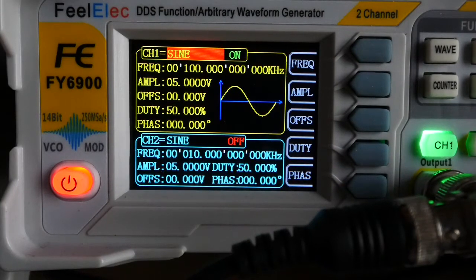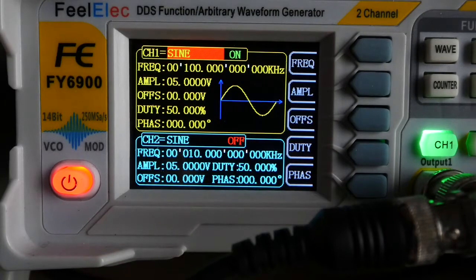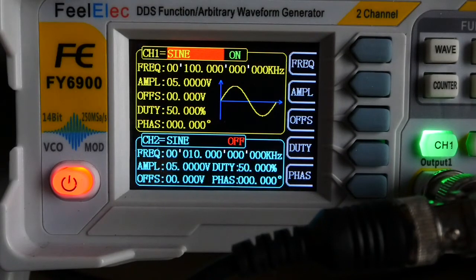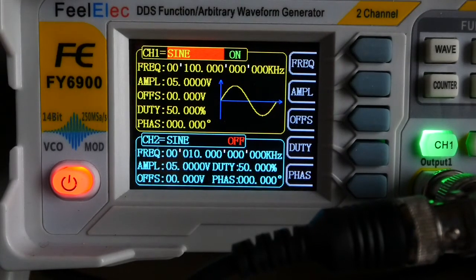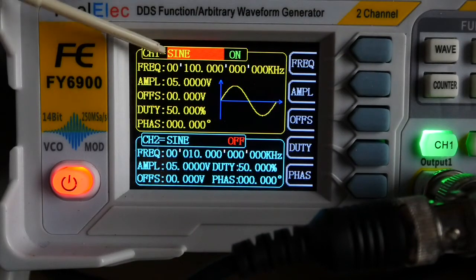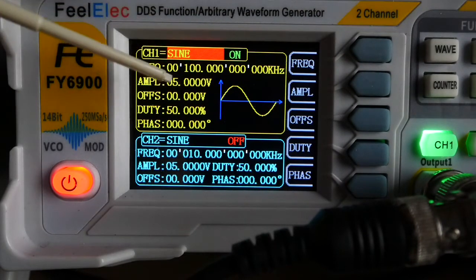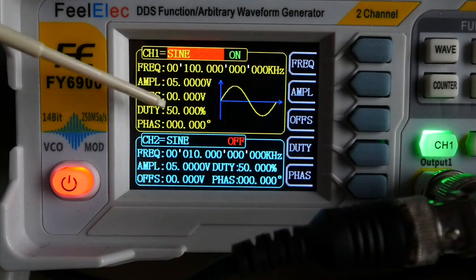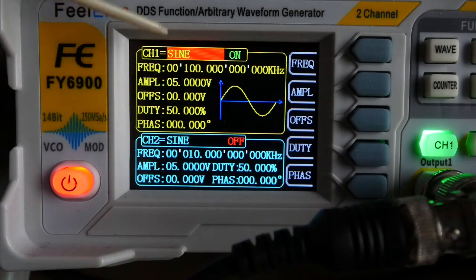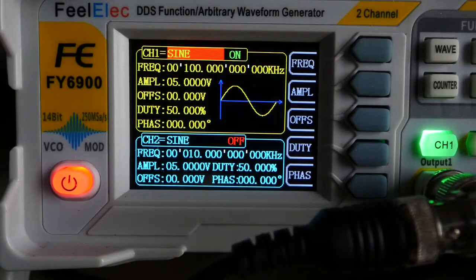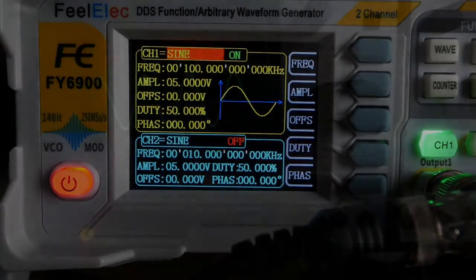First of all, we'll look at how the FFT display actually gives us information. When I got going with this I found it a little bit confusing, so hopefully you will find this helpful. I've got my FeLelec FE6900 set up to produce a sine wave 100 kilohertz and 5 volts with no offset.